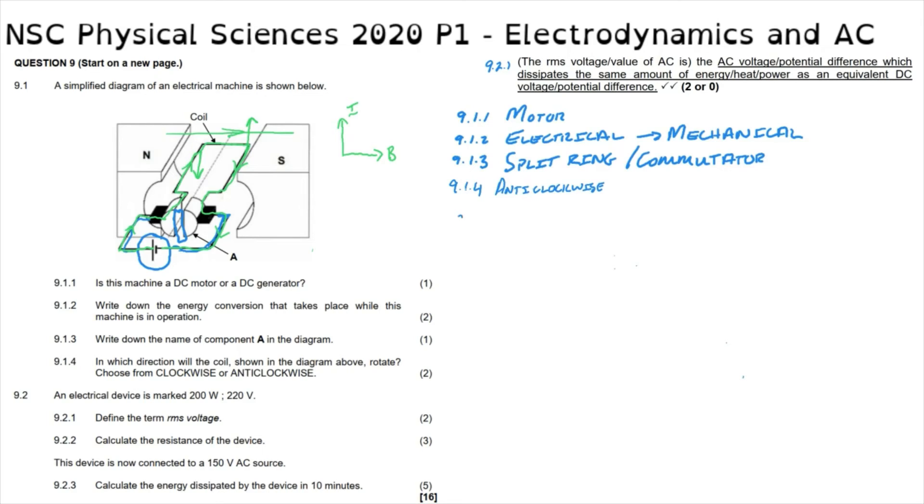Question 9.2.2 asks us to calculate the resistance of this device. As with many electricity questions, there are a number of ways to solve this problem. The use of the formula P average equals V squared RMS over R is the only formula that will give you the answer directly. The other two formulae you would have had to first calculate the current and then use another formula. We can use this because this voltage that has been given is always going to be the RMS voltage. Any marked voltage for a device is always an RMS voltage. The power is given to us as 200 watts, the RMS voltage given as 220 volts, and the resistance being our unknown. We can then solve to find that it is 242 ohms.